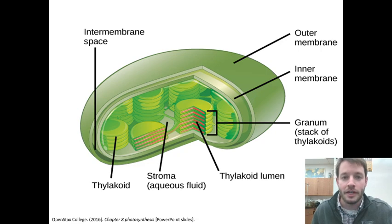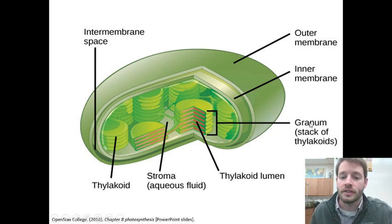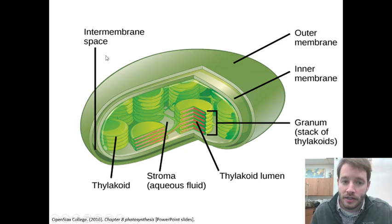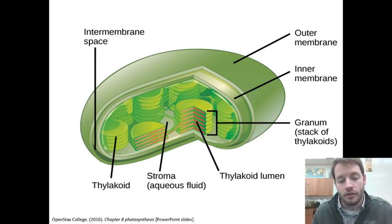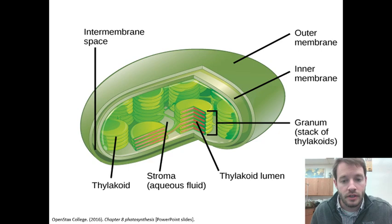Hello, Mr. Wheeler here, and today we are learning about photosynthesis. This is the site of photosynthesis — it is called a chloroplast. Chloroplasts are specific plastids within cells. They function as organelles, and this special type of plastid is responsible for being the site of photosynthesis.